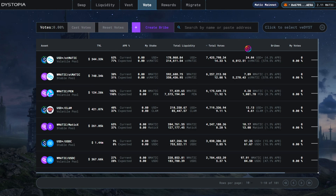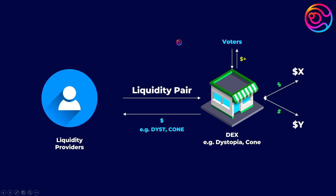In addition, other users can provide even further incentives for voters, called bribes, to encourage voters to vote on specific liquidity pools to direct higher rewards. Higher rewards for liquidity providers will, of course, attract more liquidity providers to deposit there, building liquidity, swap volume, and ultimately swap fees. Now you have a system where liquidity providers earn DEX rewards, and those who vote-lock those rewards are the ones who receive swap fees as well as extra rewards, including bribes.